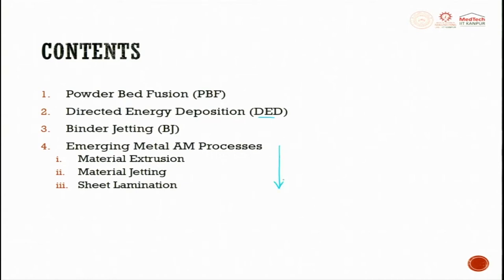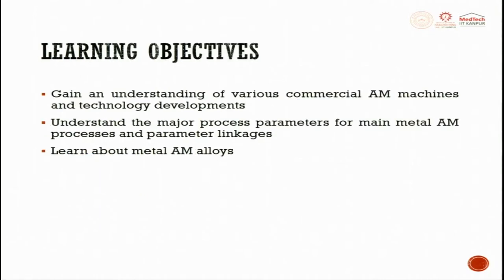The emerging processes have not yet come up in a big way in the industry. The first three processes are very well established at lab scale and have moved to industries. At the end of this lecture, the learning objectives include gaining an understanding of various commercial AM machines and technology developments, understanding the major process parameters for main metal additive manufacturing processes and parameter linkage, and learning about AM alloys.